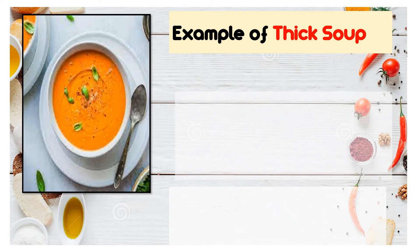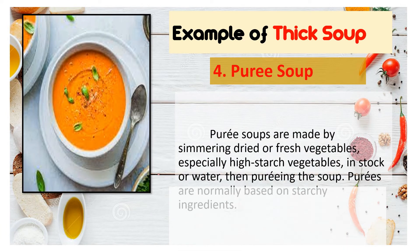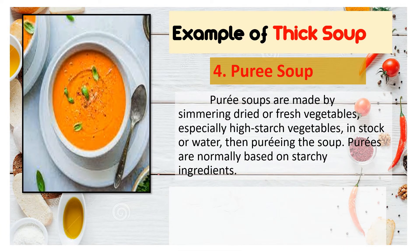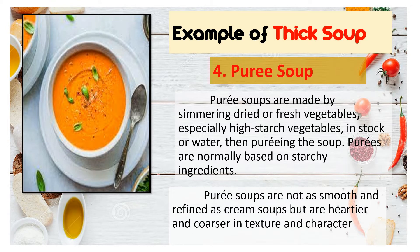The last example of thick soup is the purée soup. Purée soups are made by simmering dried or fresh vegetables — especially high-starch vegetables — in stock or water, and then pureeing the soup. Purées are normally based on starchy ingredients. Best examples of purée soups are pumpkin or squash soup, corn soup, bean soup, and carrot soup. They are not as smooth and refined as cream soup but are heartier and coarser in texture and character.